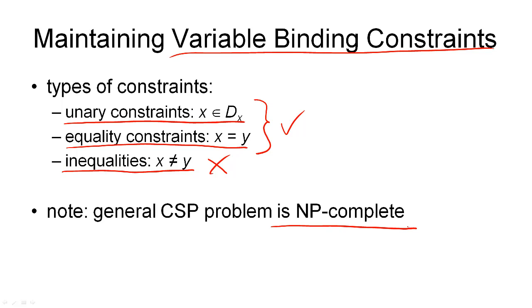In some sense, this is really bad news. Introducing variable inequalities was one of the ways we had to resolve flaws, namely flaws that are threats. So we have to deal with variable inequalities. But that means that every step in our plan refinement gives rise to an NP-complete problem that we need to solve, namely maintaining the consistency of the variable binding constraints.